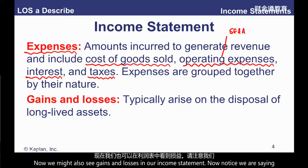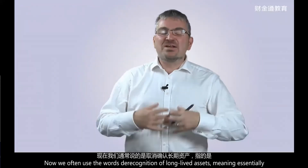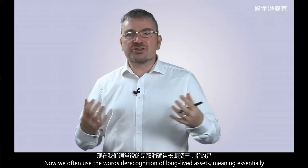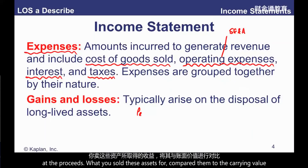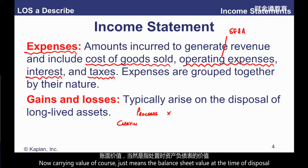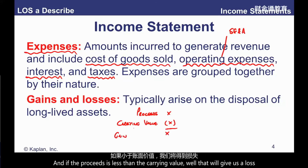Notice expenses are grouped by their nature. We might also see gains and losses in our income statement — these typically arise on the disposal of long-lived assets. We look at the proceeds — what you sold these assets for — and compare them to the carrying value, which is the balance sheet value at the time of disposal. If proceeds are greater than the carrying value, that gives us a gain; if proceeds are less, that gives us a loss.